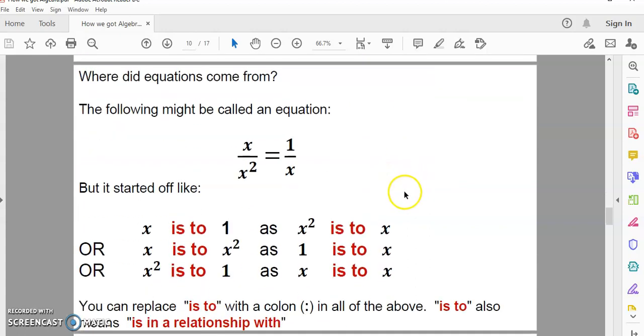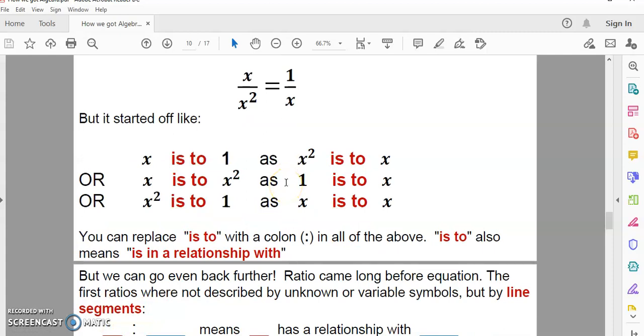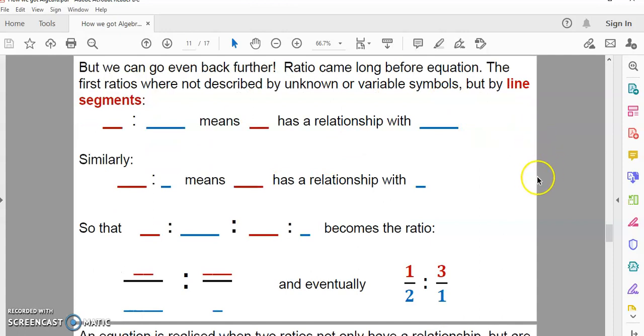So, where did equations come from? You could look at this expression here and say, well, the way we got it is like this. X is to 1 as x squared is to x. It started off as ratios. That's what a ratio is. You can replace any of these is-to with a colon, and it becomes a ratio. Is-to means is in a relationship with. But we can go back further. Ratio came long before equation. In fact, it came long before number.